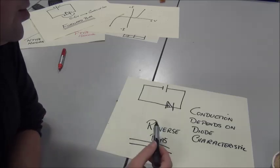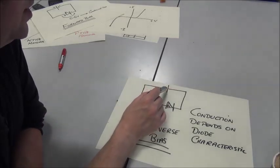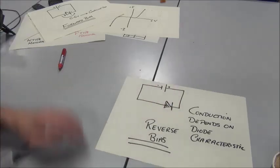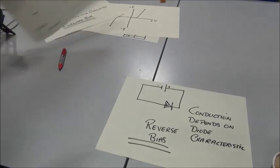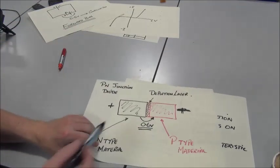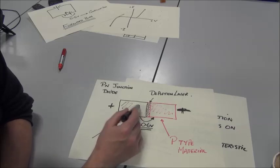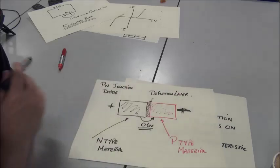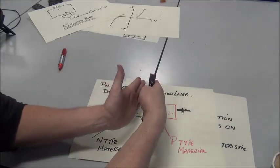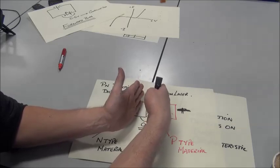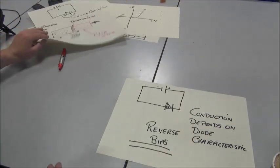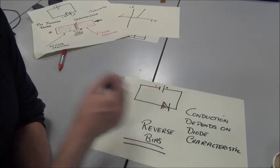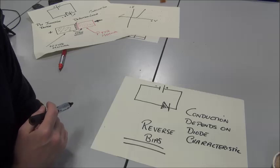The other condition is called reverse bias. Simply, all we do is swap the terminals of the power supply the other way around. Now we get attraction between the electrons and the power supply in the N-type material, and a similar thing happens in the P-type material, and the effect is to widen the depletion layer. And in reverse bias, we usually need a lot more voltage to get a diode to conduct, unless it's a Zener diode.